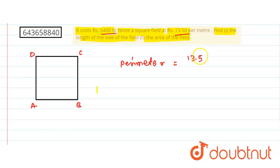This is rupees. So this is 5400 divided by 13.50. So this is simply 400 meters. So this is the perimeter.